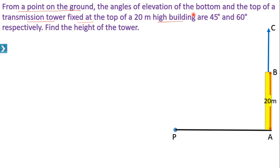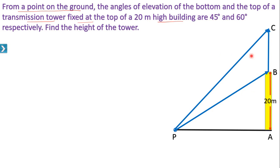The angles of elevation of the bottom and top of the tower: the first angle of elevation of the bottom, that is from P to B — PB is the line of sight and the angle of elevation is 45 degrees. And to the top, the angle of elevation is 60 degrees. From point P, this angle is 45 degrees and this angle is 60 degrees.